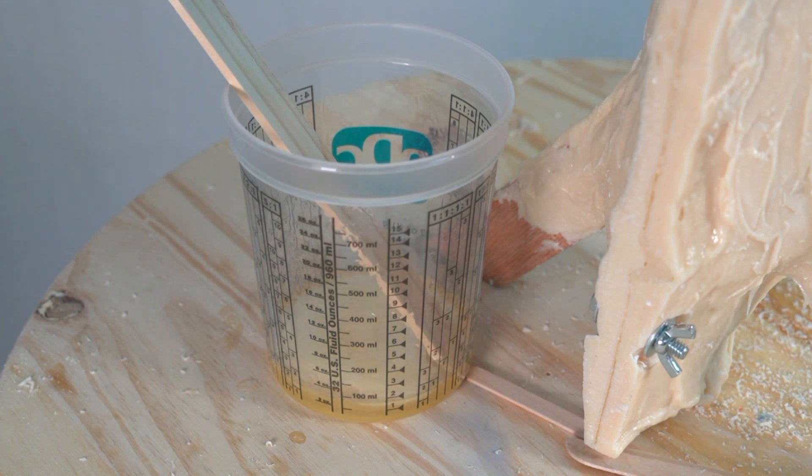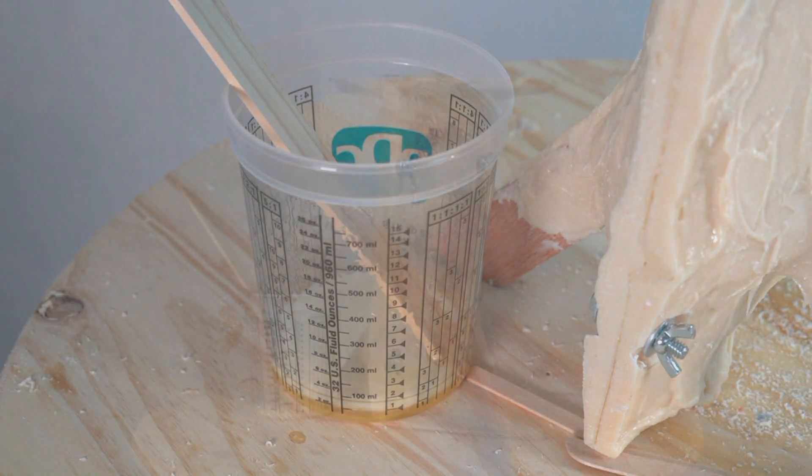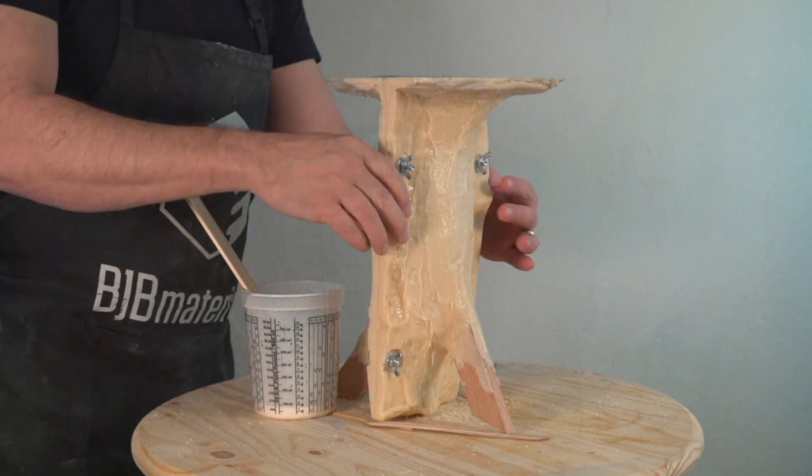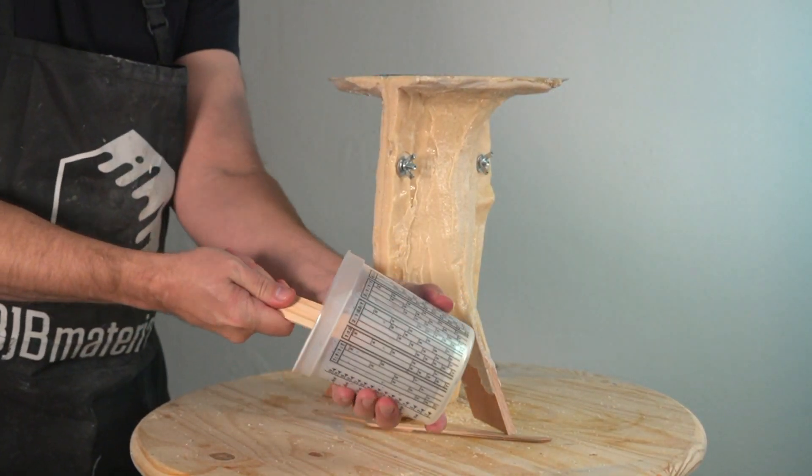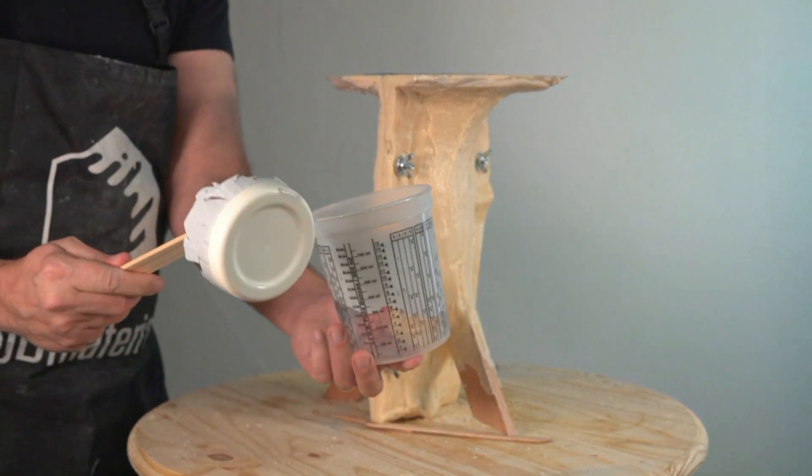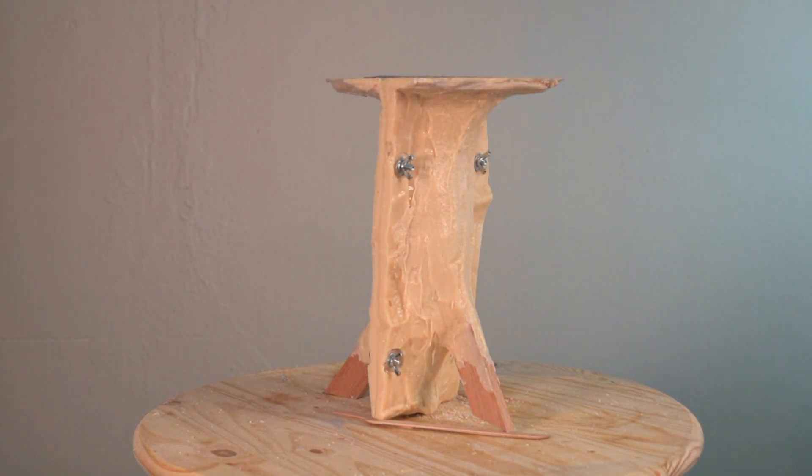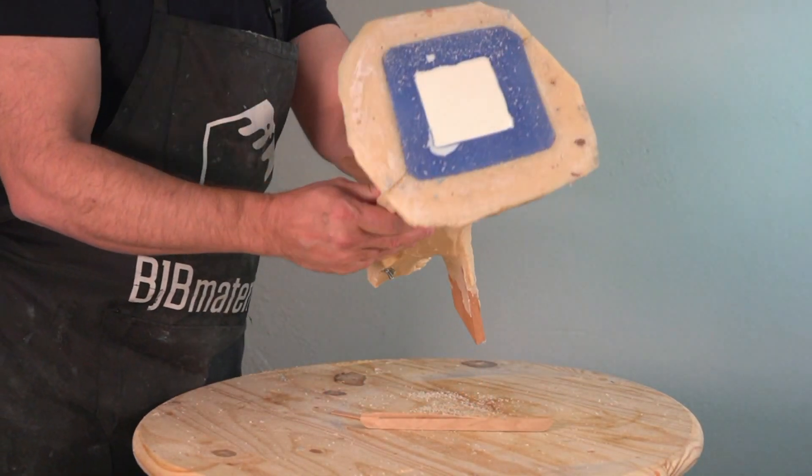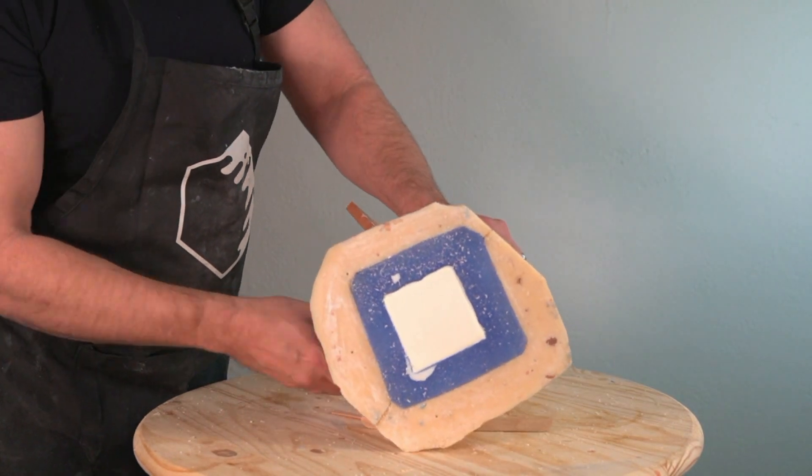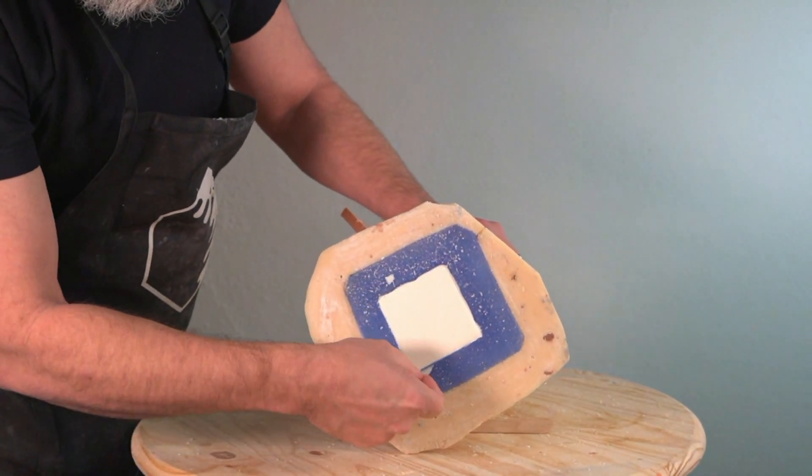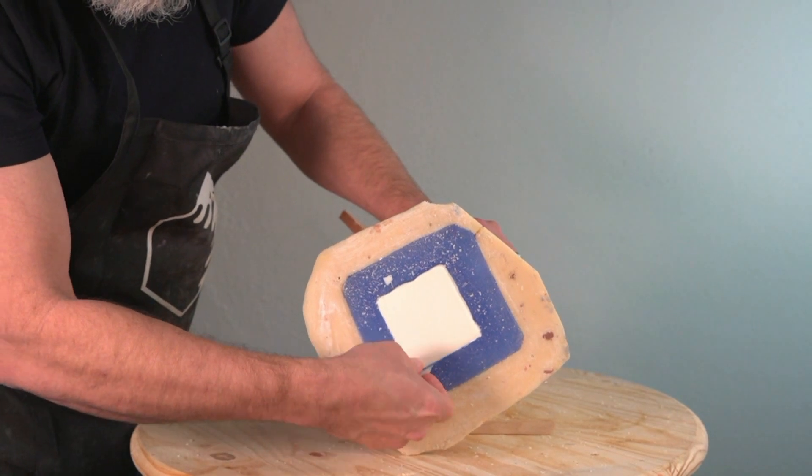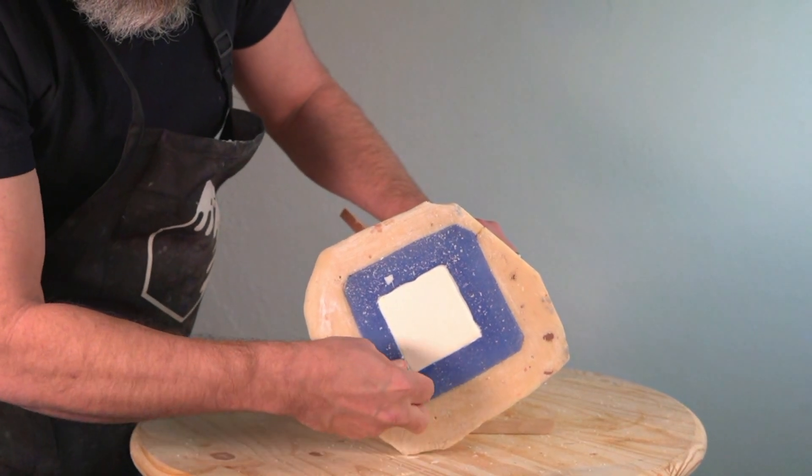Typically you can demold this resin system in about 10 to 15 minutes depending on the cross section. Polyurethane resin systems cure the inverse of an air drying system, so the thinnest cross section will cure last. I leave the stir stick in that batch so I can pull that out and now my mixing cup can be used again. When I can peel that up and that's nice and firm, that's a good indicator that I'm ready to demold my part.